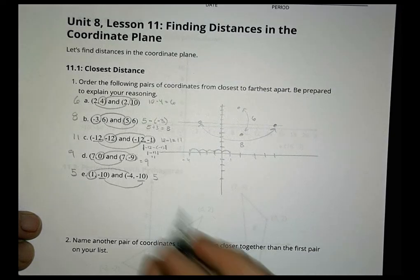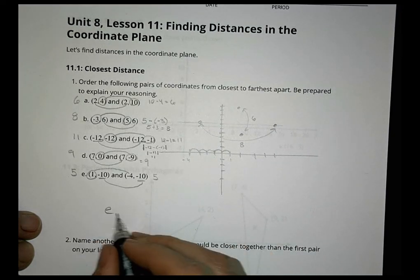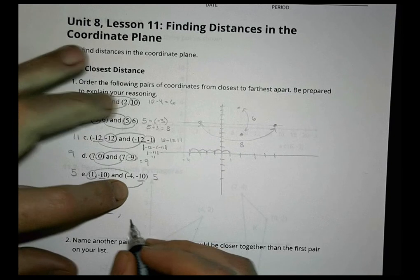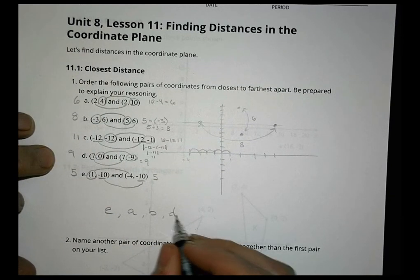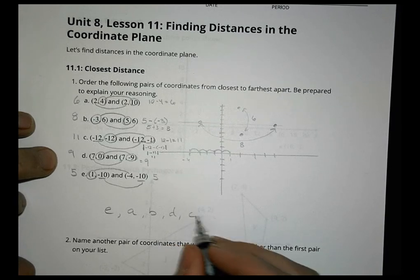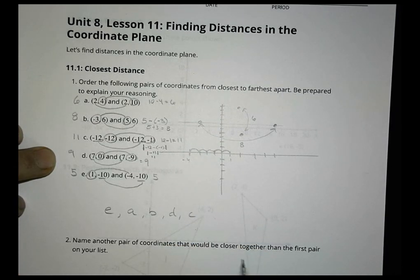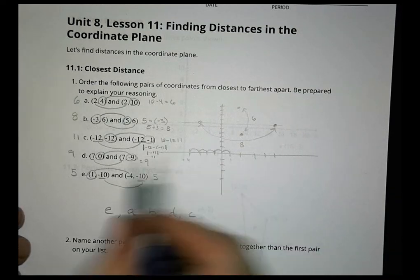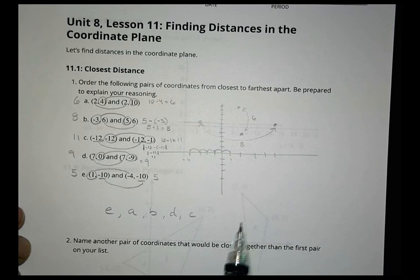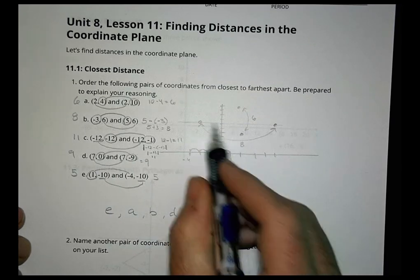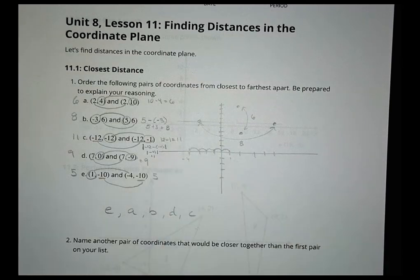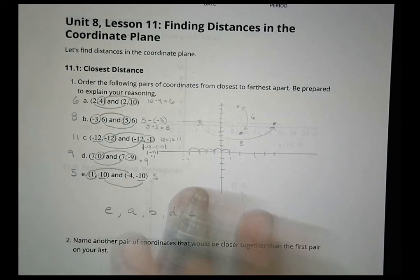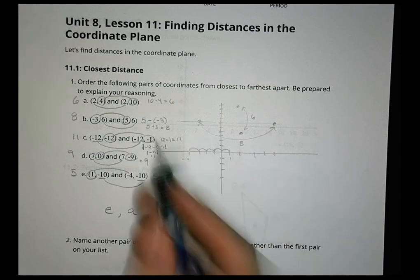Putting them in order from closest to farthest: E (5), A (6), B (8), D (9), and C (11). These distances are easy to calculate once you recognize these are pairs of points on a line. You find the difference between one coordinate and the other, or count up the grid squares on the coordinate axis.